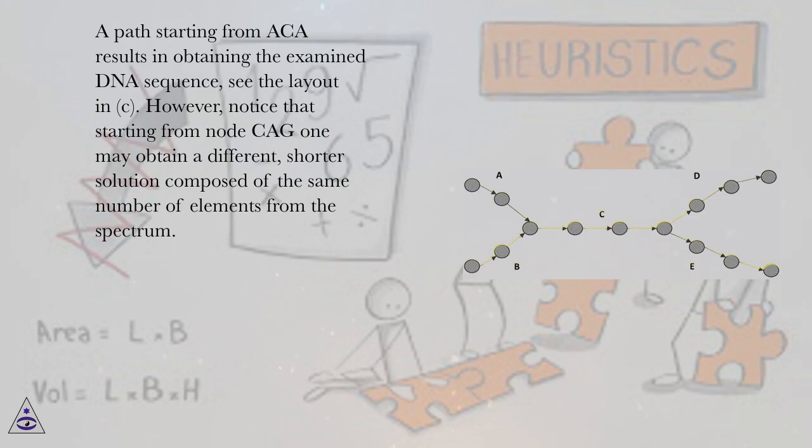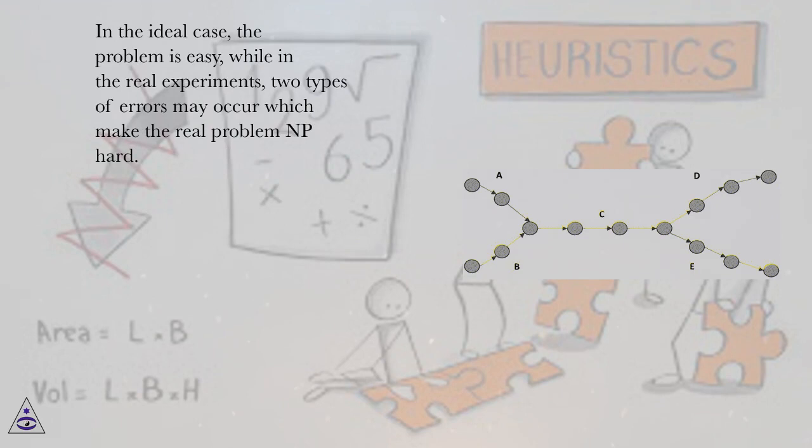In the ideal case, the problem is easy, while in the real experiments, two types of errors may occur which make the real problem NP-hard.